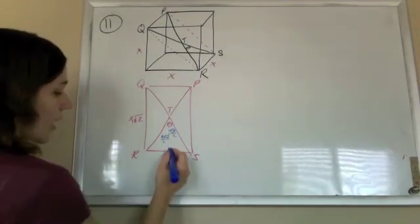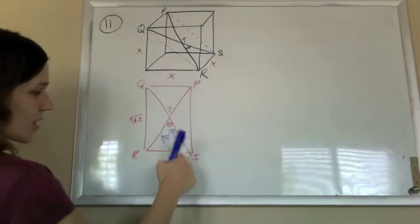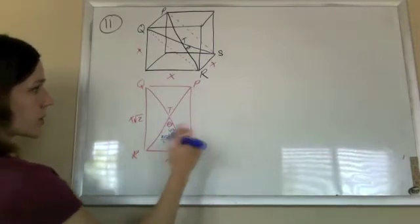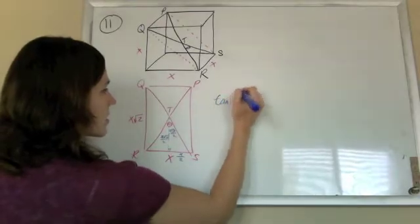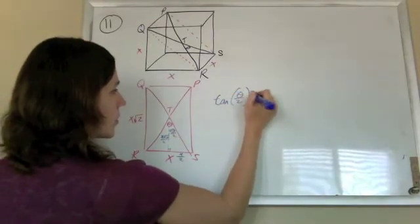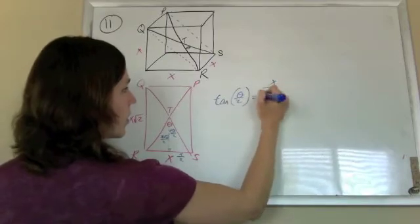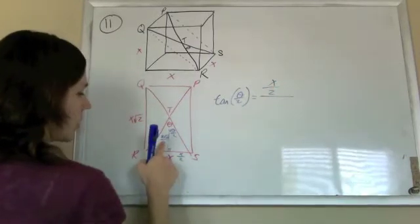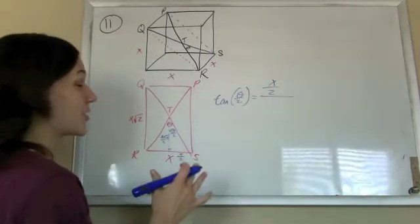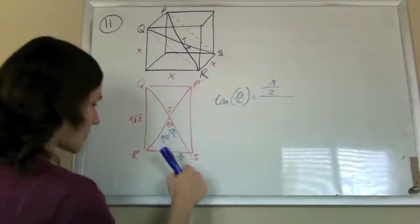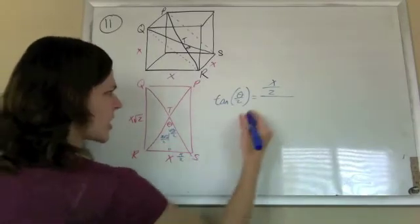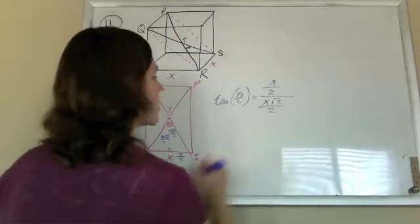So now, if I want the tangent of that, it's just opposite over hypotenuse. So the tangent of theta over 2 is just the opposite, X over 2, over the hypotenuse. No, no. Opposite over adjacent, my bad. Tangent's opposite over adjacent. Just testing you. This is X root 2 over 2.